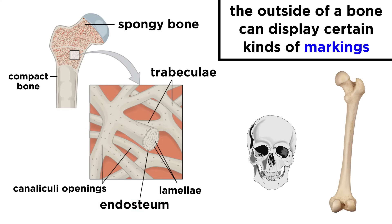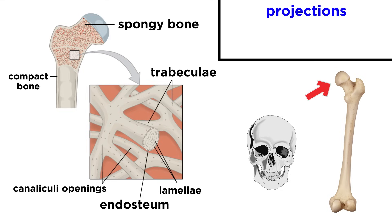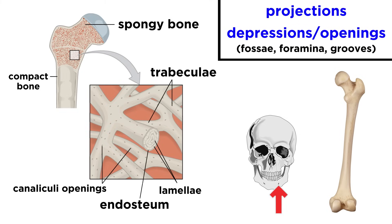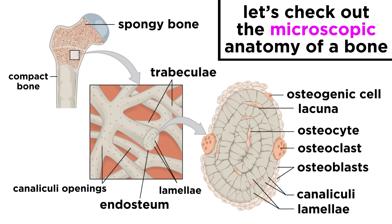In addition, the outside of a bone will display markings, which can be projections that bulge out, or depressions and openings like fossae, foramina, and grooves. Now that we have this view covered, let's zoom in a little more and check out the microscopic anatomy of a bone.